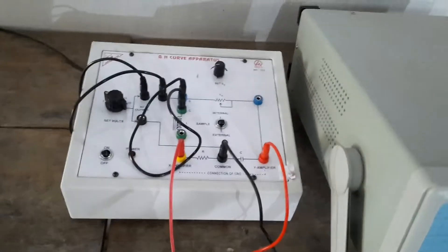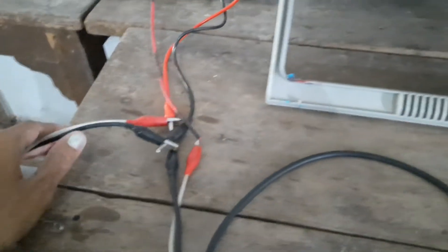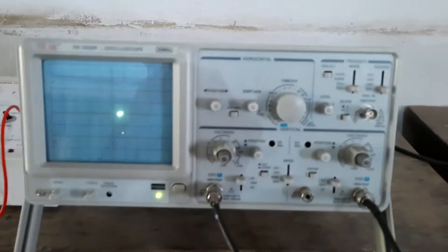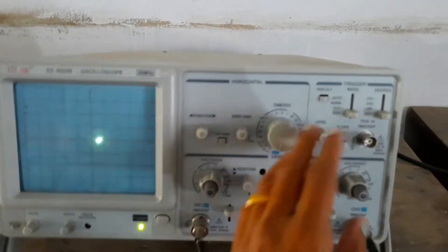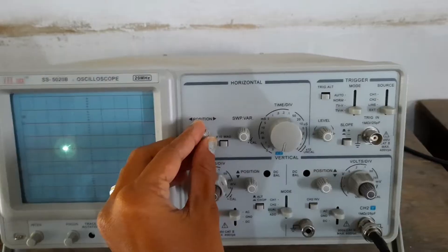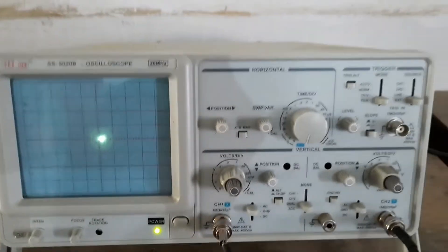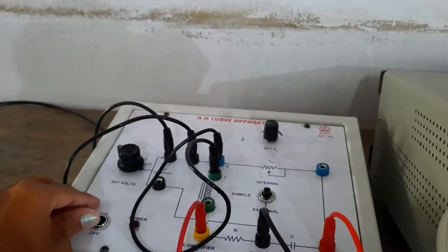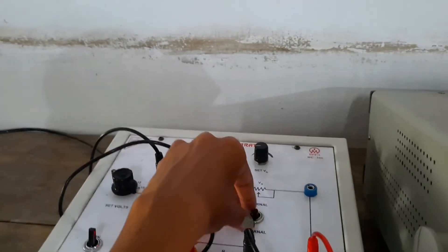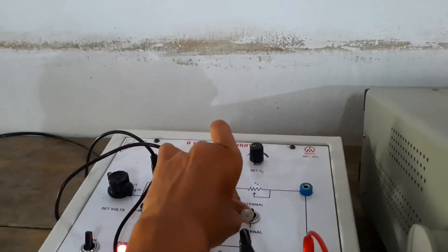We have to connect to the channel 1 and 2. So we have made the connections using these cords. If we switch on first we should get one spot here on CRO. Then what I will do I will switch on here main switch of BH curve apparatus. So we have to keep this knob internal.